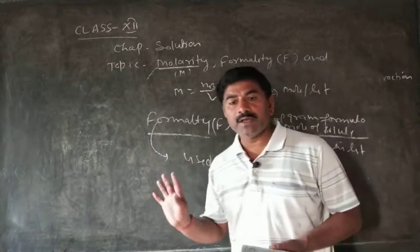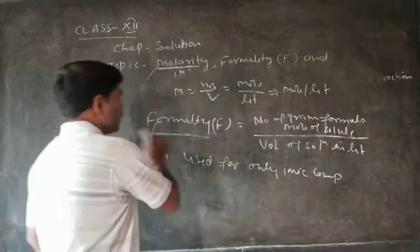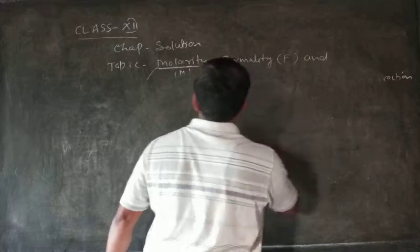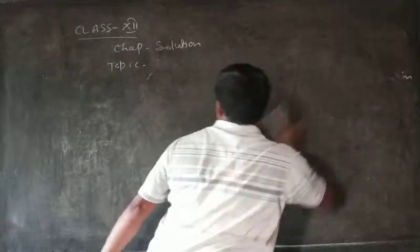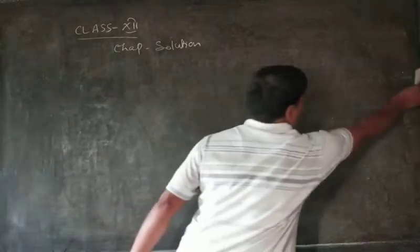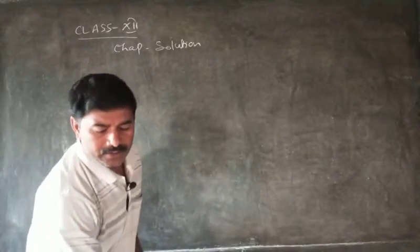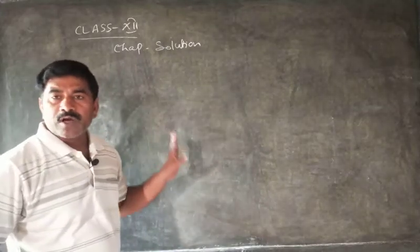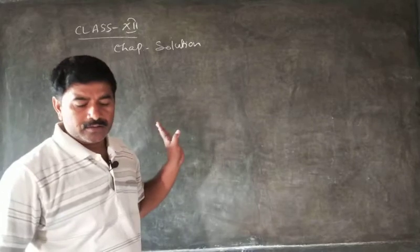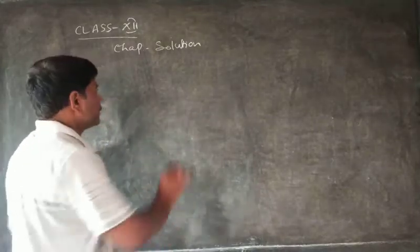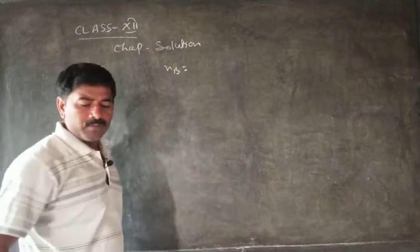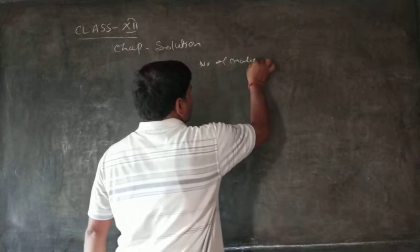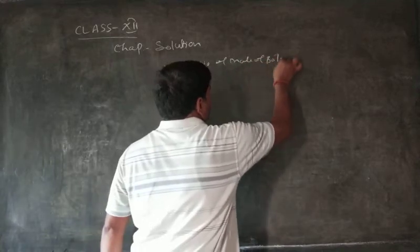Now the last topic: the relation between molarity and mole fraction. Since we know that molarity is equal to the number of moles of solute upon the volume of solution in liters. Let us consider NB as the number of moles of solute.